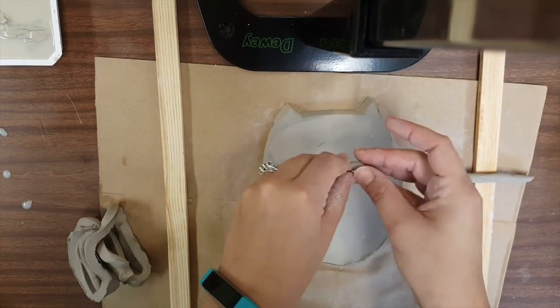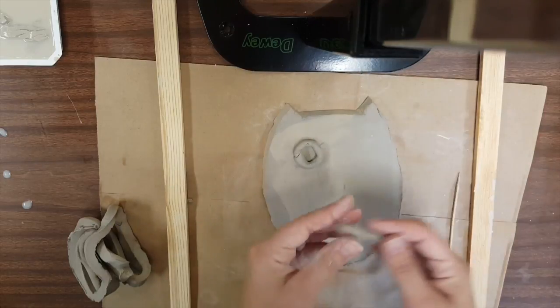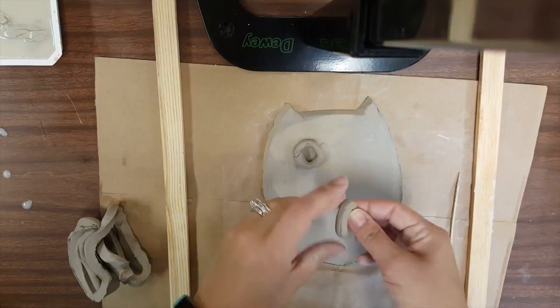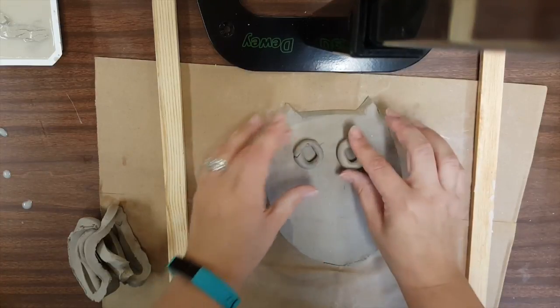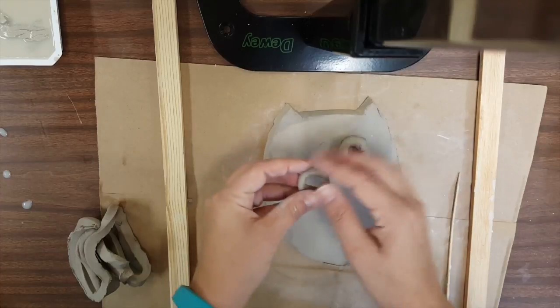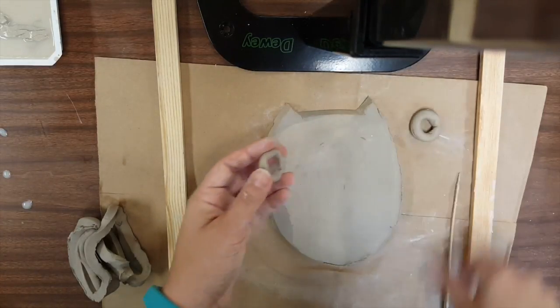Whenever we're attaching clay to other clay, there are steps that you're going to want to follow. It doesn't just stick by itself. So we want you to use the steps in this order: you're going to score the clay, add some slip, stick the pieces together, and then you can smooth the edges.